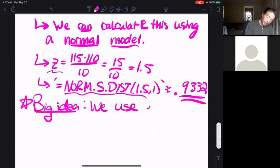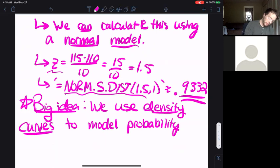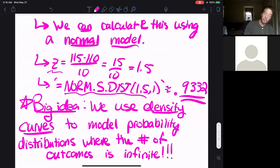The big takeaway: we use density curves to model probability distributions where the number of outcomes is infinite.